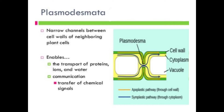Plasmodesmata are the characteristic of the plant cells. They are found in all types of plant cells. They are found in red algae, liverworts, mosses and vascular plants. They are also found in all types of tissues in plants including meristem. Plasmodesmata may occur in groups or they may be distributed throughout the wall.